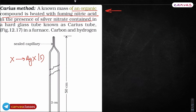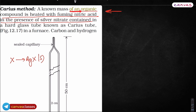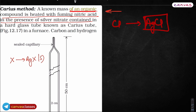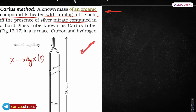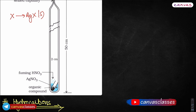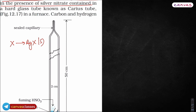Let me give you a quick idea of Carius method. In Carius method, the organic compound is heated with fuming nitric acid in the presence of silver nitrate. If chlorine is present in the organic compound, heating with AgNO₃ gives an AgCl precipitate; if bromine, AgBr is formed; if iodine, AgI is formed — meaning silver halides are formed. So Carius method is used for the estimation of halogens. I hope you enjoyed the lecture — please share Canvas Classes.